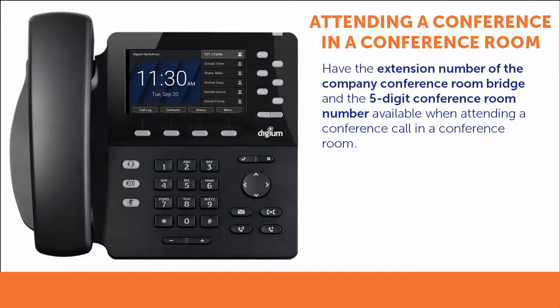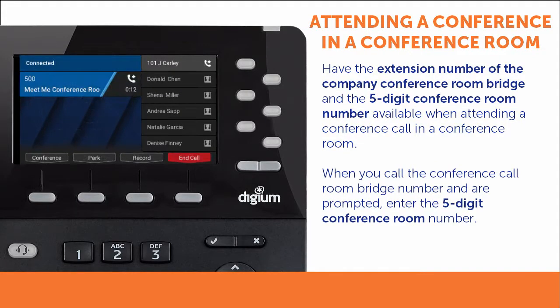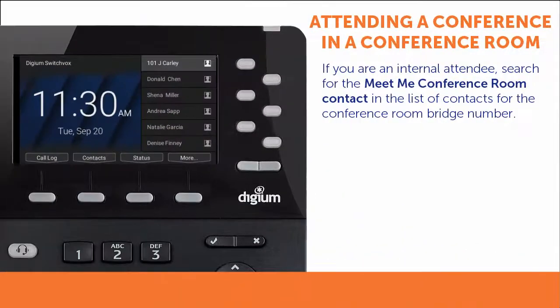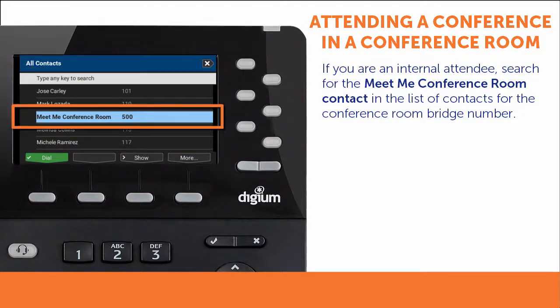To attend a conference call in a conference room, be sure to have handy the extension number of the company conference room bridge, and the five-digit conference room number that were provided to you. When you call the conference room bridge number, enter the five-digit conference room number when prompted. Internal attendees can search for the conference room bridge number in the Contacts application under the Meet Me Conference Room Contact, or contact the System Administrator for assistance.